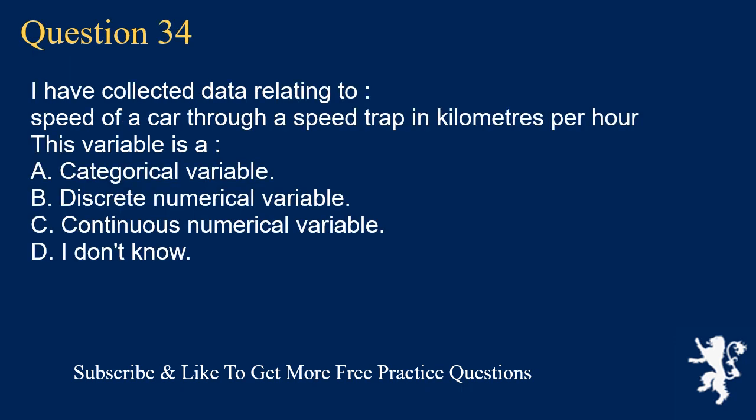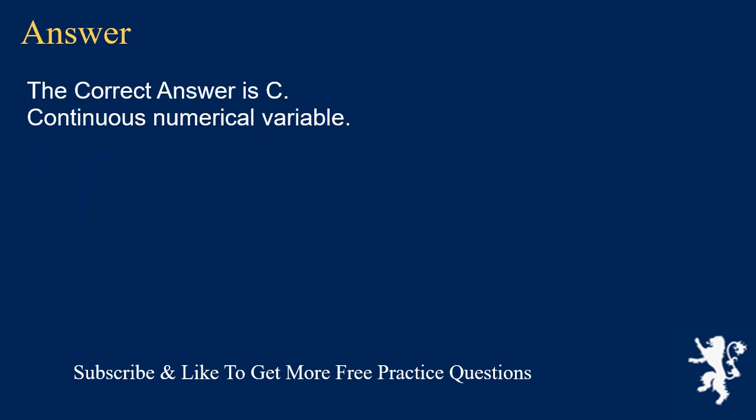Question 34: I have collected data relating to speed of a car through a speed trap in kilometers per hour. This variable is A. a categorical variable, B. discrete numerical variable, C. continuous numerical variable, D. I don't know. The correct answer is C, continuous numerical variable.